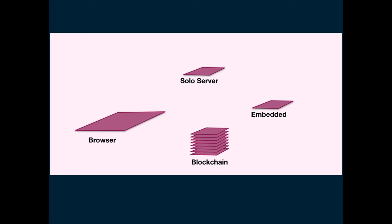JavaScript, the language, has no I/O. It's essentially a pure computational language, where all I/O, all ability to cause effects in the world, is provided by the host. JavaScript has several very different hosts — it started in the browser, is very prominent on single machine servers, in embedded devices, and now on blockchain. What we're advancing is Secure ECMAScript, a secure runtime for enforcing the security properties needed to turn JavaScript into an object capability language.